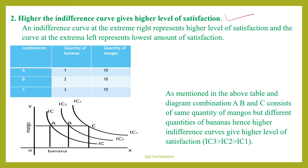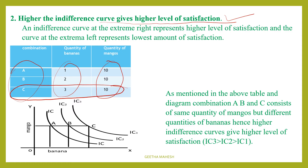The second feature: the higher the Indifference Curve, the higher the level of satisfaction. The same quantity required to increase bananas — in all combinations, bananas are the same. In combination C, the number of bananas is the same. C combinations are the same, and that gives a higher level of satisfaction.